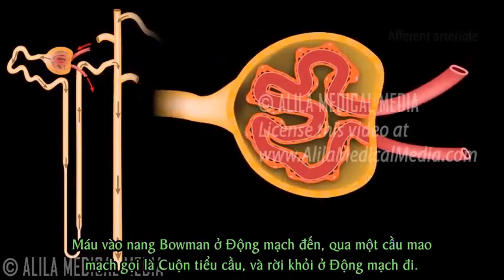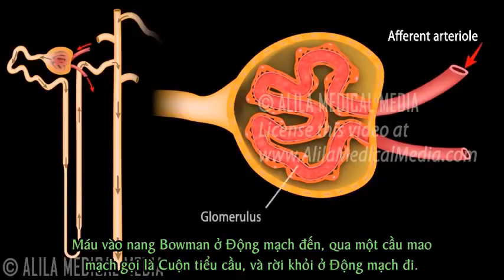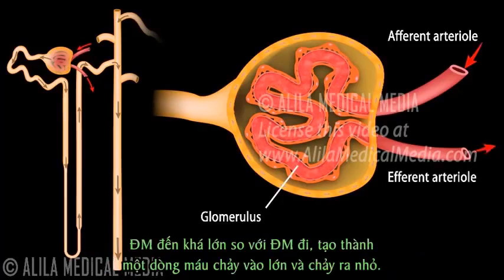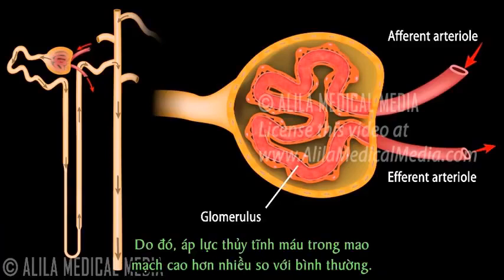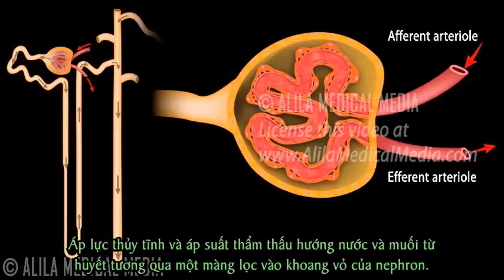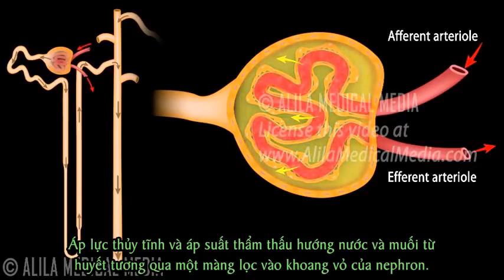Blood enters the Bowman's capsule via the afferent arteriole, passes through a ball of capillaries called the glomerulus, and leaves via the efferent arteriole. The efferent arteriole is significantly smaller than the afferent arteriole, creating a blood flow with a large inlet and small outlet. As a result, the blood hydrostatic pressure in these capillaries is much higher than normal.